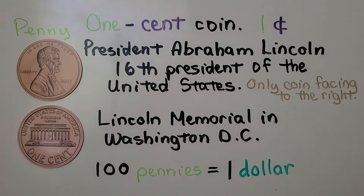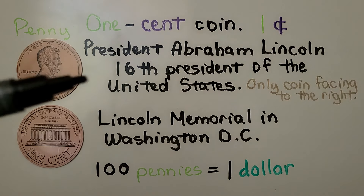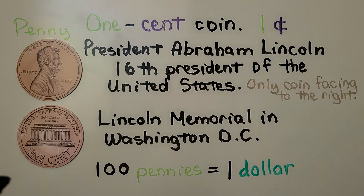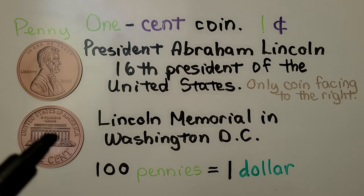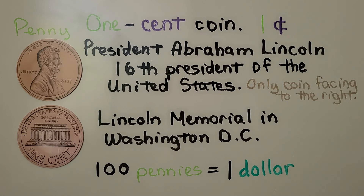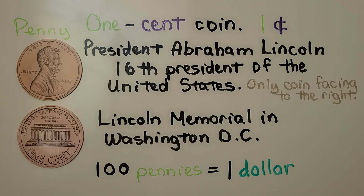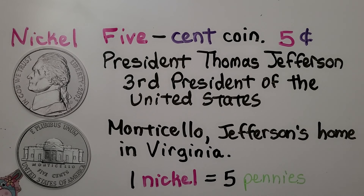A penny is a 1 cent coin. We write it as 1 with the cent symbol. It's got President Abraham Lincoln, the 16th president of the United States, on the front, and it's the only coin that has the face facing to the right — all the other coins have the face facing to the left. On the back, it says United States of America, and this is the Lincoln Memorial in Washington, D.C. If you look very closely, there's a statue of Lincoln sitting down in the center, just like the real Lincoln Memorial. 100 pennies is equal to $1.